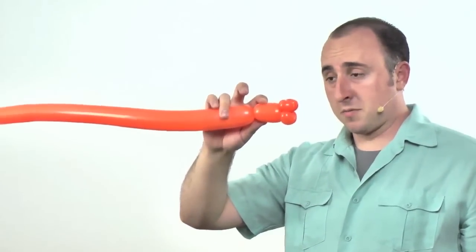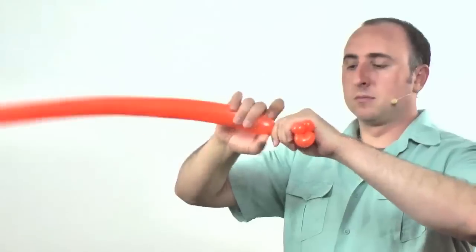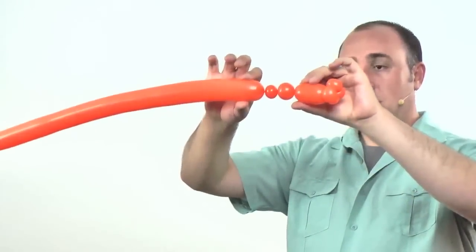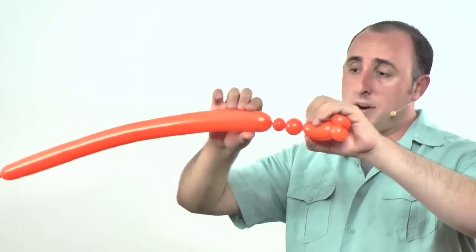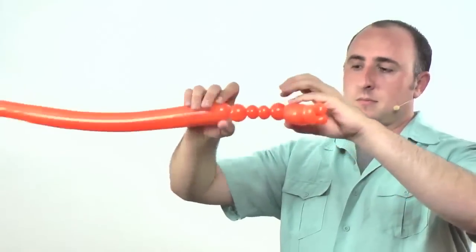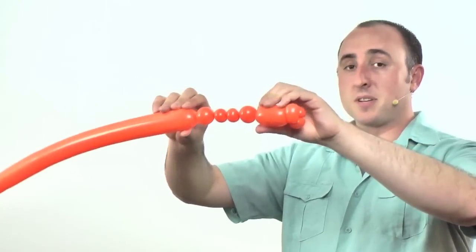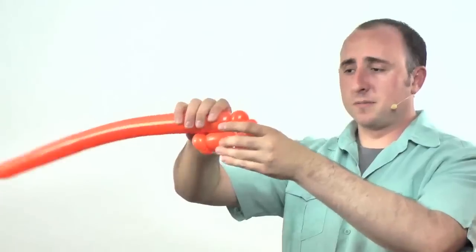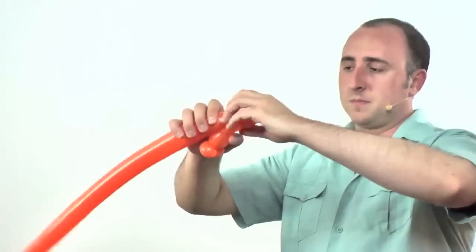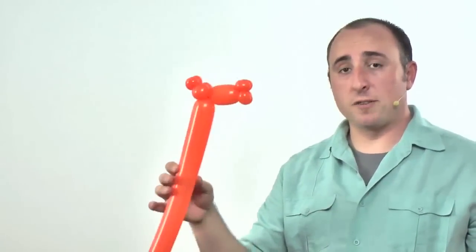Now comes a tricky part. We're going to make the horns. To do that, we're going to make a one-inch bubble followed by a half-inch bubble. Now we're going to do that again but in reverse: half-inch bubble, one-inch bubble. So these two here should be about the same size and these two here should be about the same size. Now fold it over and twist this section here into this section here, and there we have the horns of our giraffe.